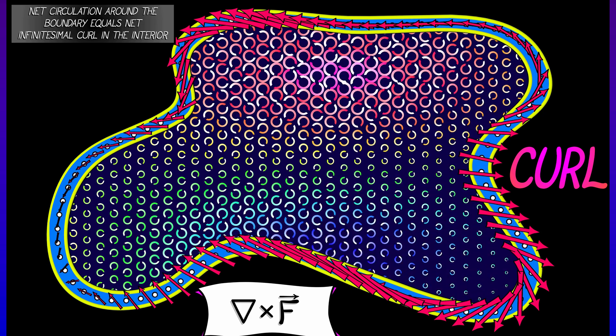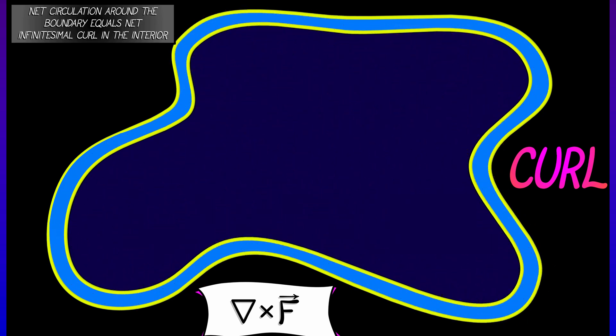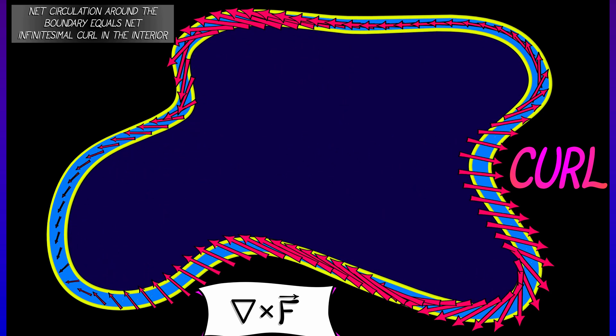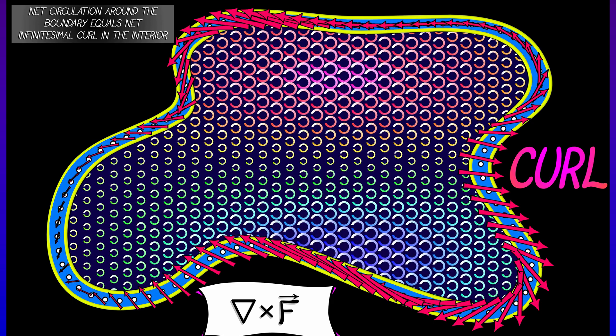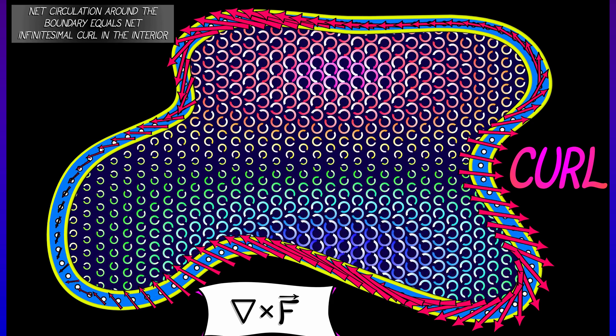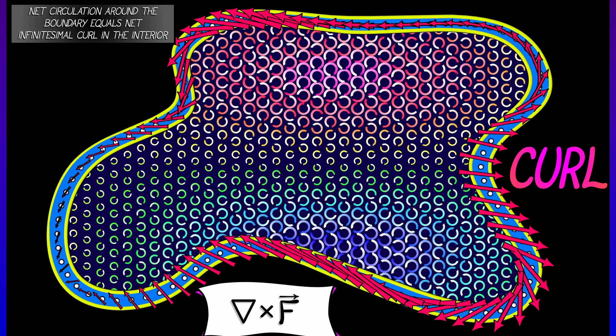This is what the curl density is telling you. In regions where you have a counterclockwise motion, that is a positive curl density, and that contributes positively to the net circulation along the boundary.